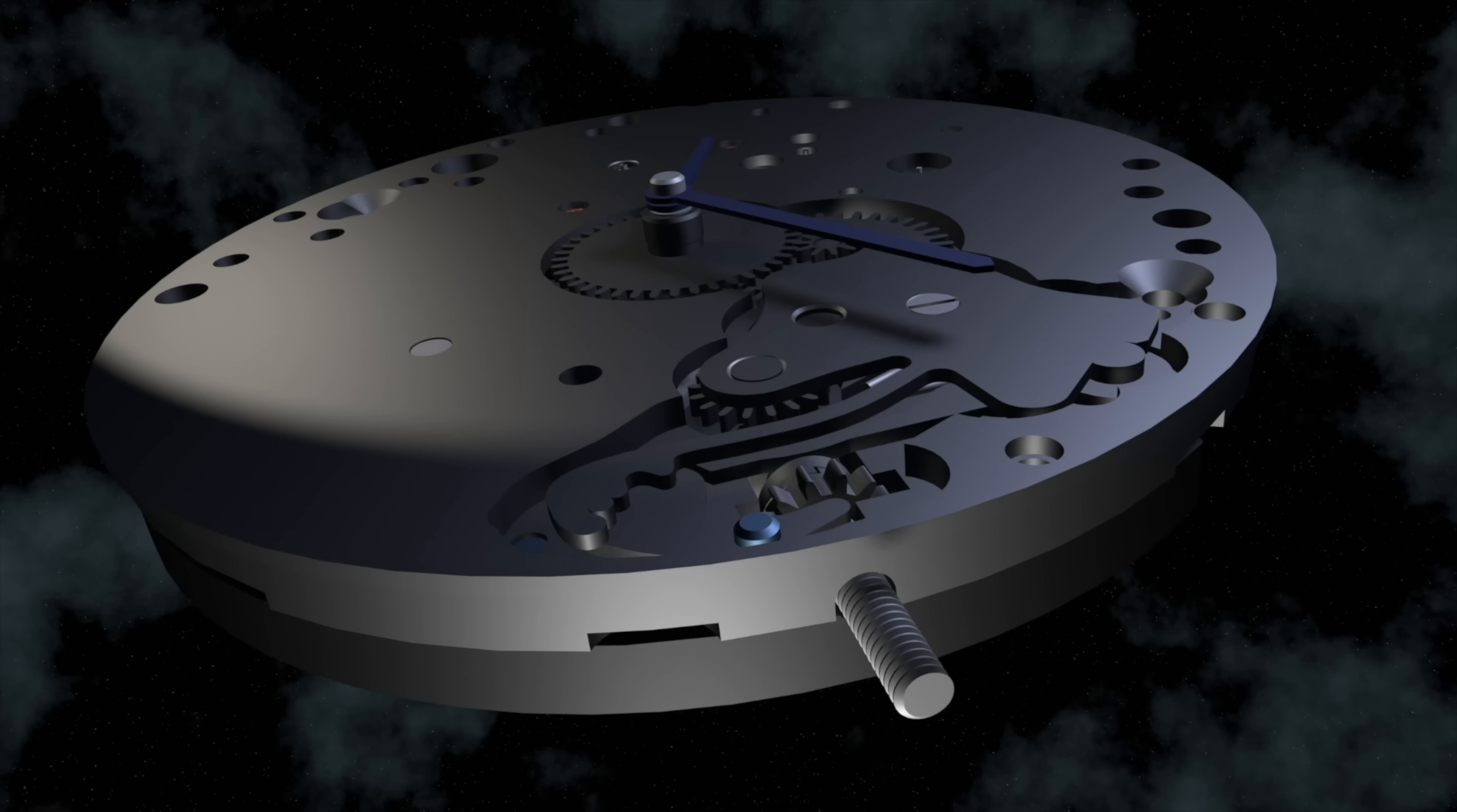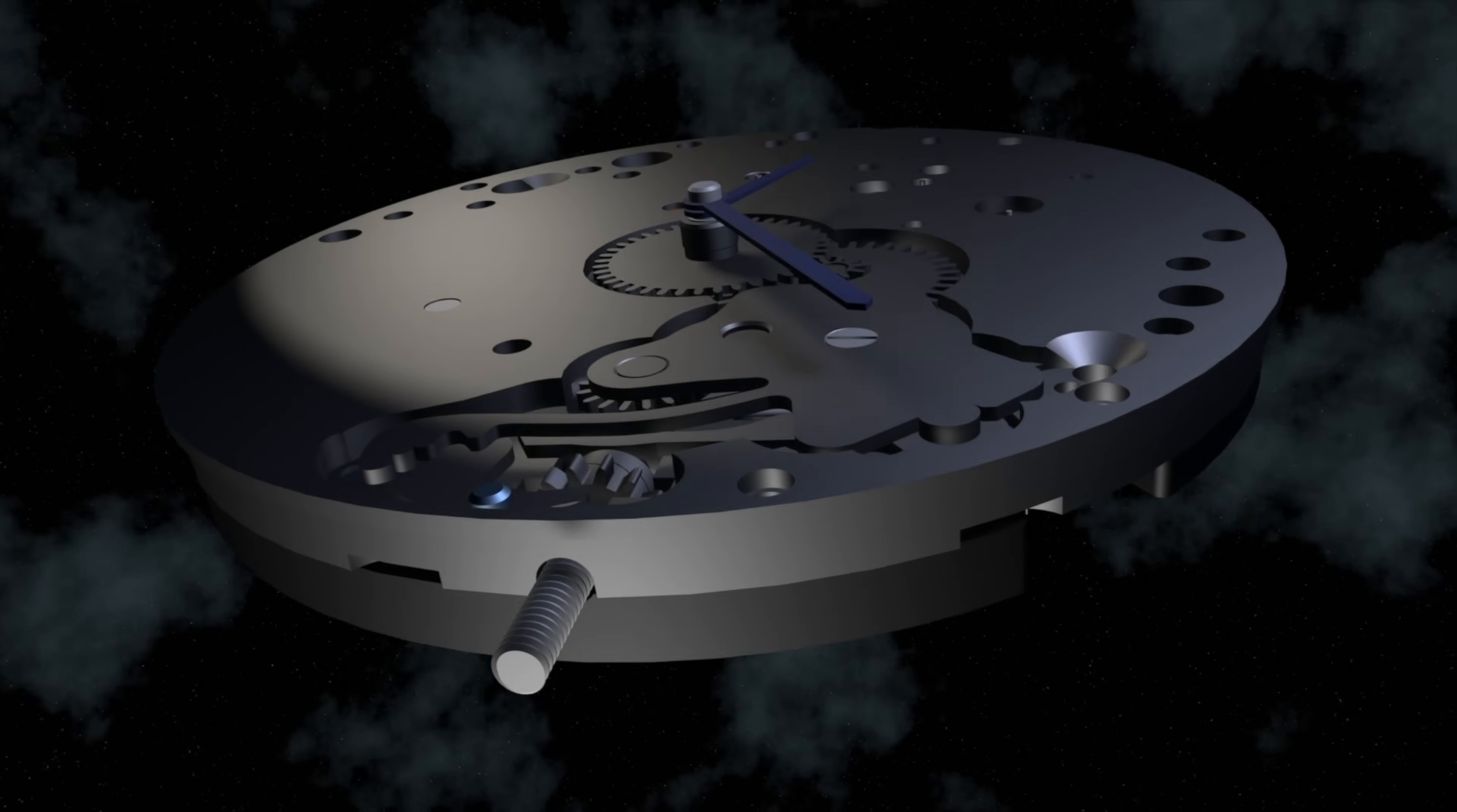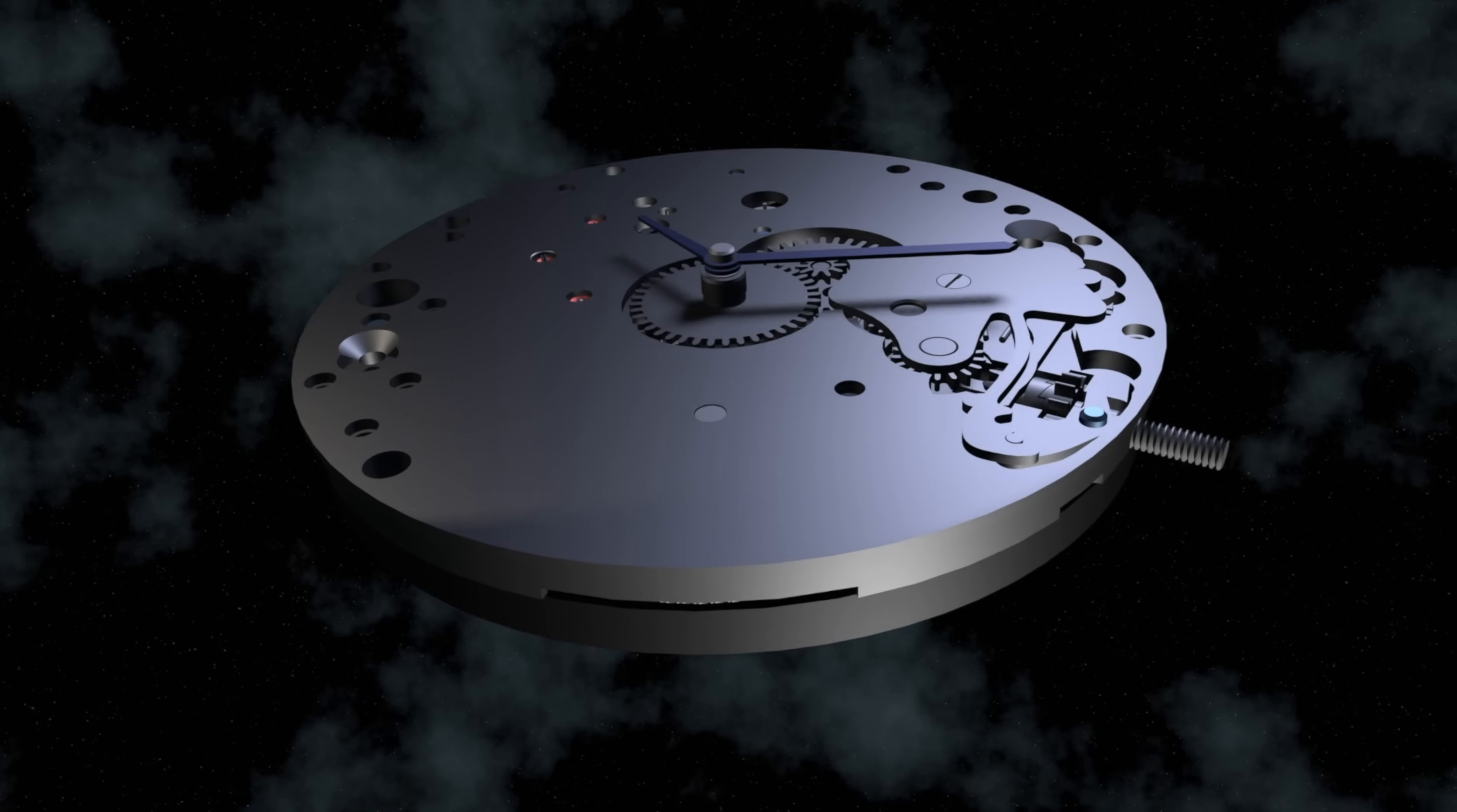So the keyless works here allow you to either set the time or wind the watch, depending on the position you move the crown in this particular case. So as you pull the crown out one or more steps, this then engages a different set of gears which enable a different function. So before the keyless works were invented, you needed a separate key to wind the movement and to set the time. So here of course you do not need a key, hence the name keyless works.